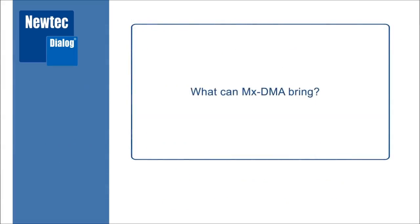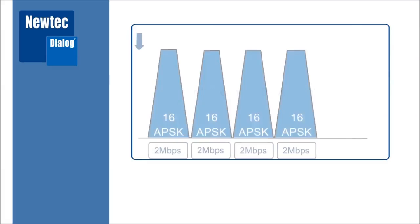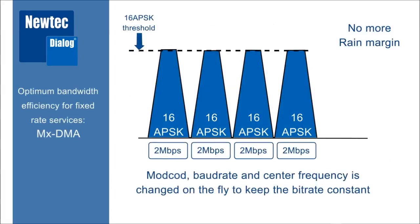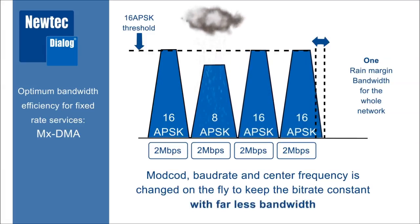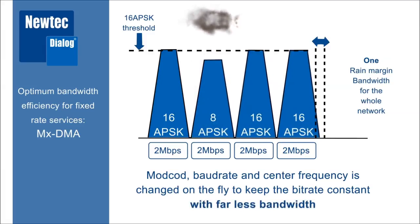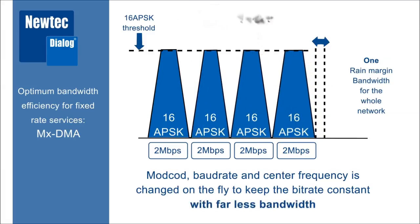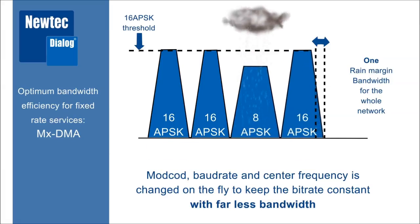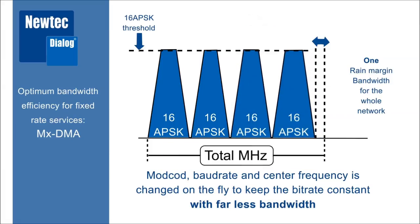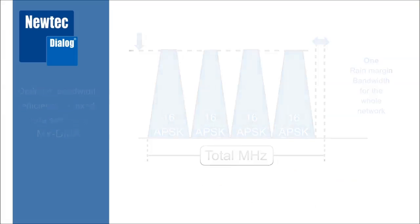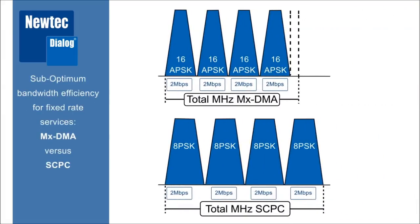This is where MXDMA can step in, saving bandwidth while still ensuring the fixed bitrate. It works by having a rain margin, but the key difference is that we only need one rain margin for the complete network. In case of rain, we simply increase the baud rate of the carrier where it rains and dynamically move the center frequency of some of the other carriers, so all sites maintain their fixed bitrate with only one rain margin. This saves a lot of bandwidth compared to traditional SCPC, and the more sites you have, the bigger the savings become.